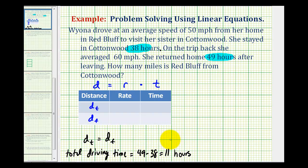Now we need to be careful because this does not mean that she spent half the time driving to Cottonwood and half the time driving back, because notice how her average speed to Cottonwood is less than the average speed of her return trip. So we'll let the time traveled to Cottonwood be represented by the variable x. And since the total driving time is 11 hours, the driving time for the trip from Cottonwood would have to be 11 hours minus x.